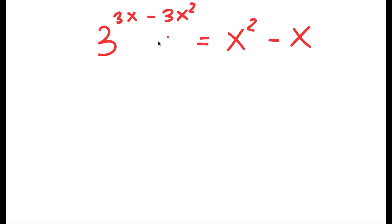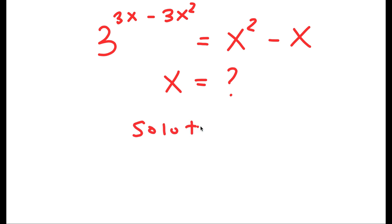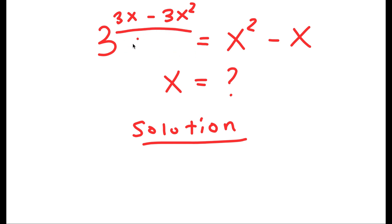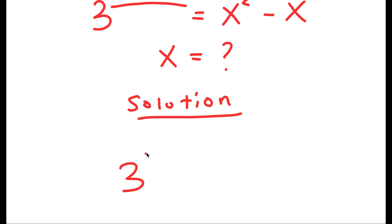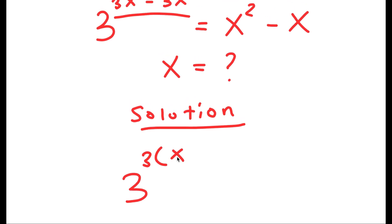I want to find the value of x for this problem. For my solution, I'm going to first start by factoring out 3 from the exponent, so I get 3 to the power of 3 times (x minus x squared) is equal to x squared minus x.